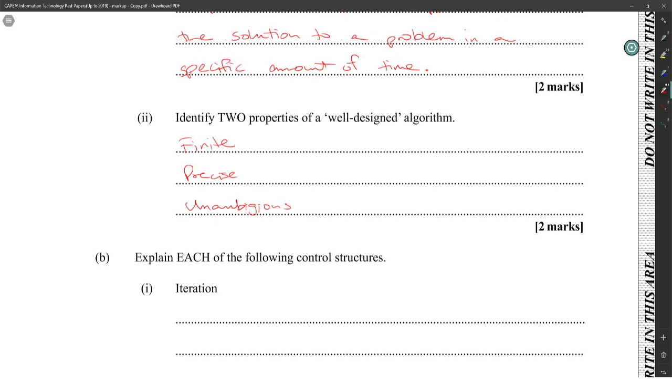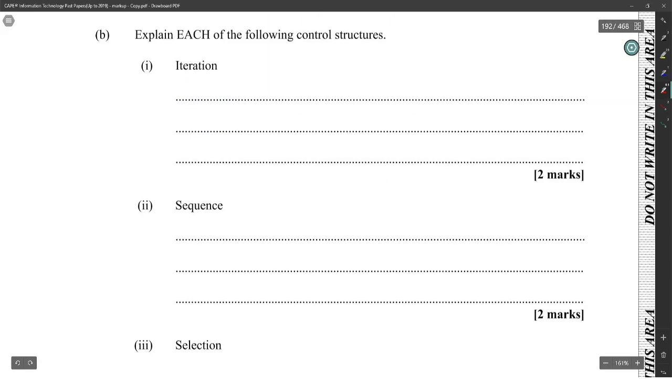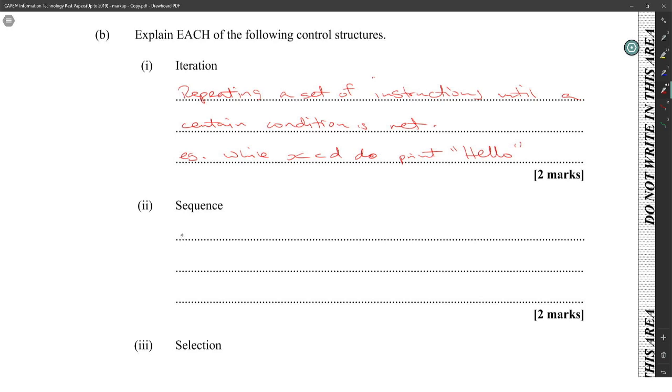Explain each of the following control structures. Iteration is repeating a set of instructions until a certain condition is met. Example: while x is less than 10. Sequence is the execution of a list of instructions one after the other.